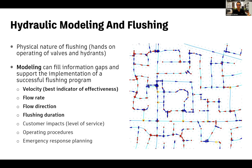Where does hydraulic modeling fit in this very physical flushing world? Modeling can help you fill information gaps to support the implementation of your flushing program. Key metrics that can make or break your flushing program include hitting target velocities, the right flow rates, and the correct flushing durations in order to clean your areas correctly. With a model, you don't need to assume — you can verify as you're closing valves and creating sequences that you're meeting your velocity, flow direction, flushing duration, and flow rate requirements.